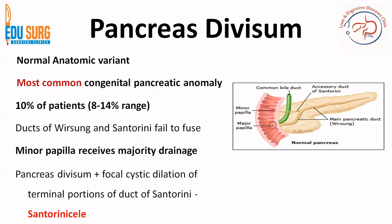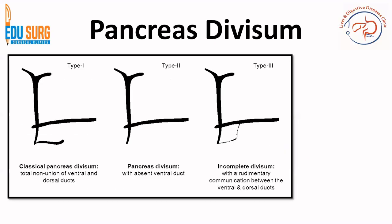When there is pancreas divisum with a focal cystic dilatation of the terminal portion of the duct of Santorini, it is known as Santorini's seal. Regarding types: Type 1 is the classically described pancreas divisum with total non-union of the dorsal and ventral ducts. Type 2 involves an absent ventral duct with the dorsal duct remaining. Type 3 is incomplete division, where the ducts attempt to unite with a thin communication but drainage remains dominant through the minor papilla.